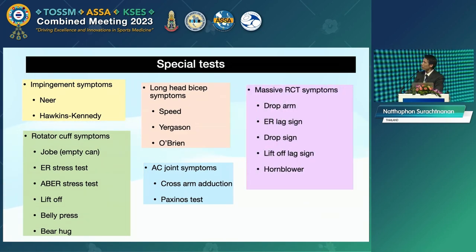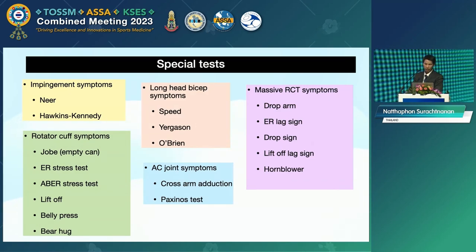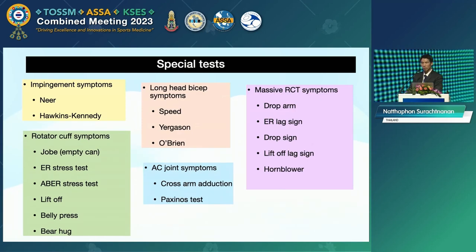And for the massive rotator cuff symptoms, we assess the drop arm and lag sign, and possibly the hornblower test.